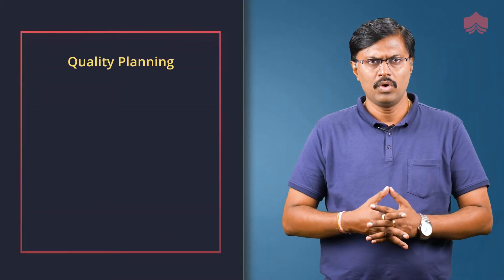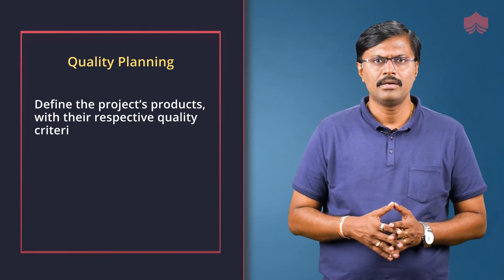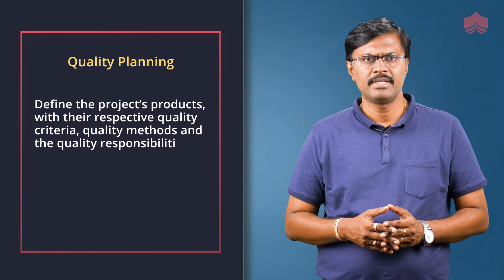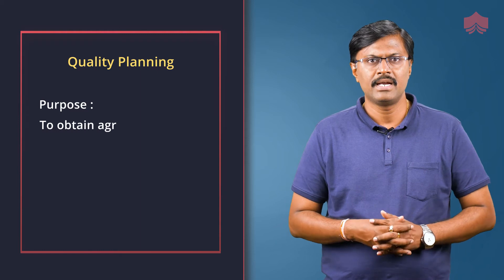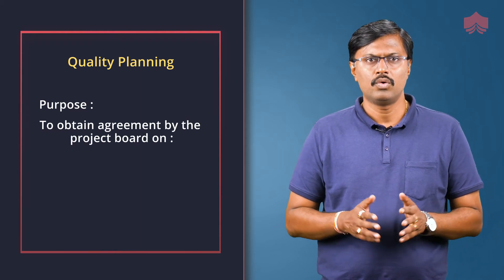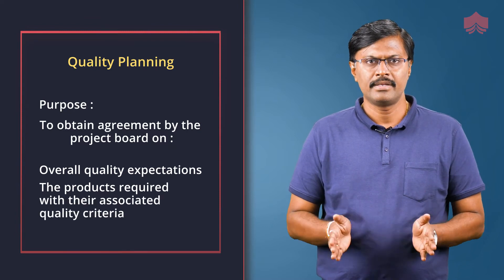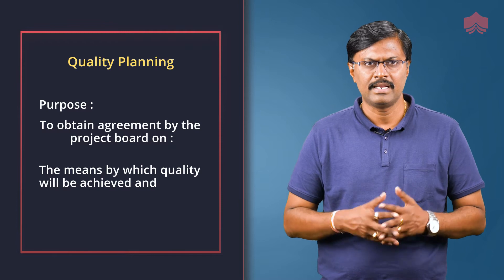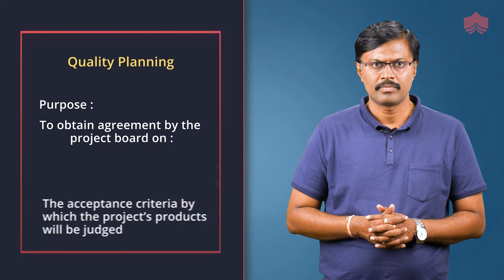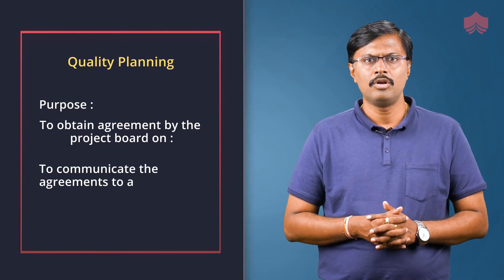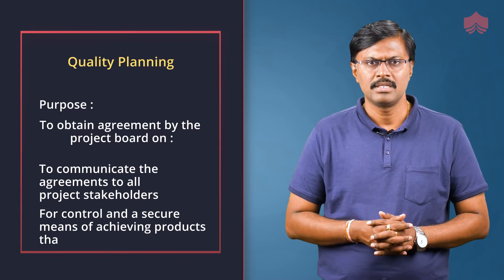Quality planning defines the project's products with their respective quality criteria, quality methods, and the quality responsibilities of those involved. The purpose of quality planning is to obtain agreement by the project board on overall quality expectations, the products required with their associated quality criteria, the means by which quality will be achieved and assessed, and the acceptance criteria by which the project's product will be judged. It also communicates these agreements to all project stakeholders for control and a secure means of achieving products that are fit for purpose.